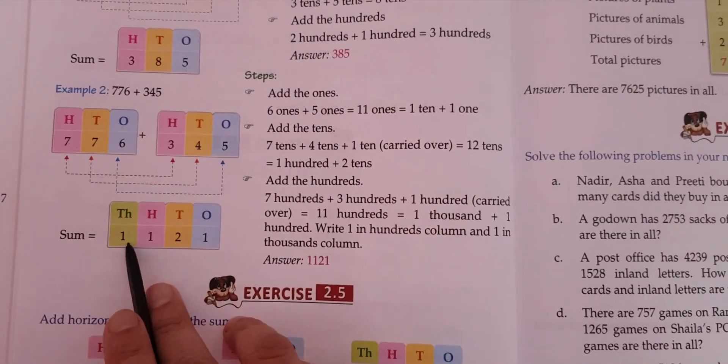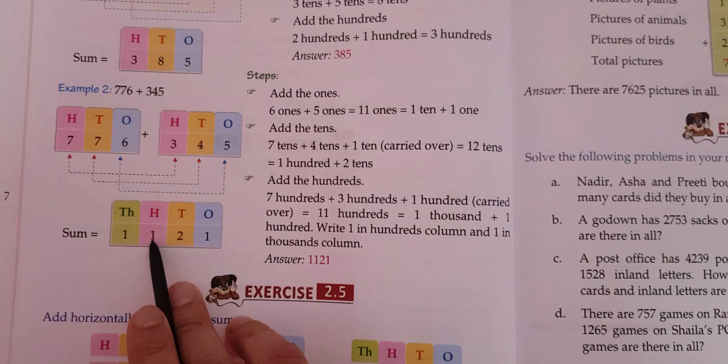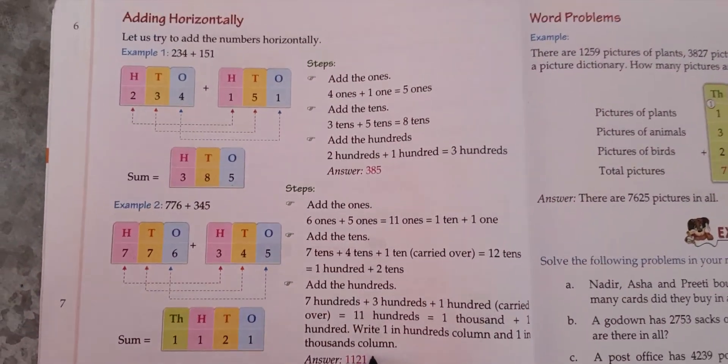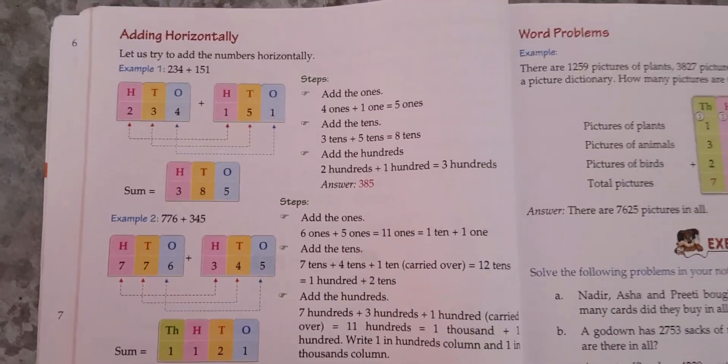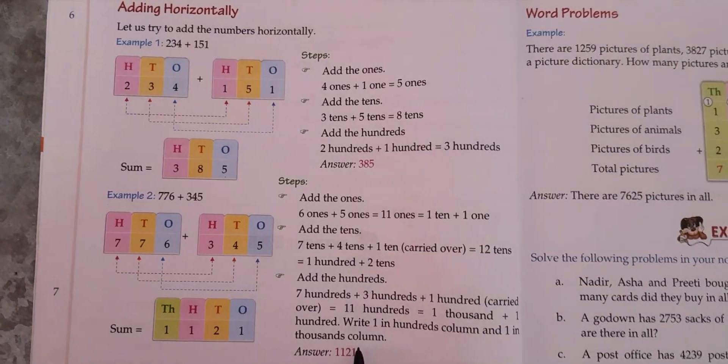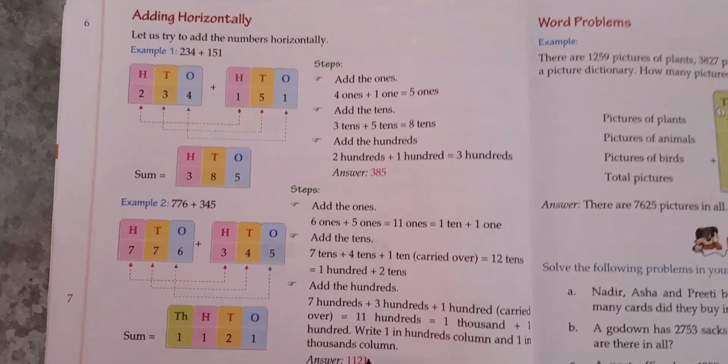So we write one thousand one hundred twenty-one. That will be your answer. Hope you have understood how to add horizontally. You will be given a handout as well as the exercise. Please do it on a sheet of paper. God bless.